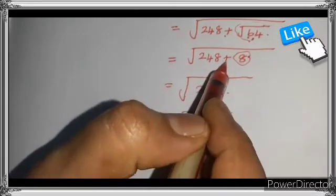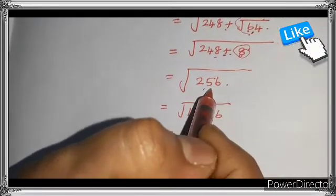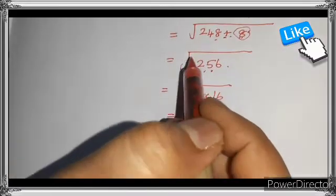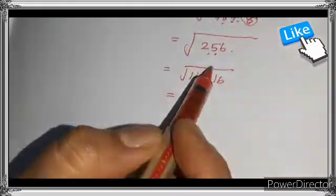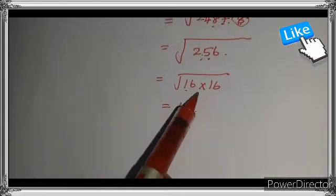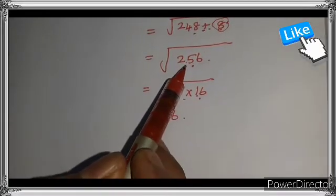Next we have to add. So 248 plus 8 is 256. Next we have to find the square root of 256. That is equal to 16 × 16.